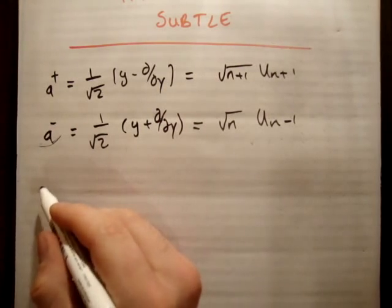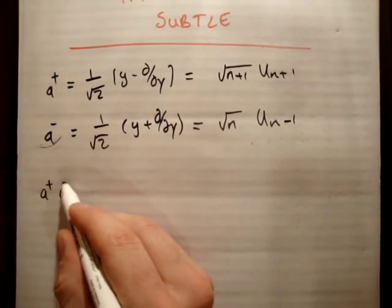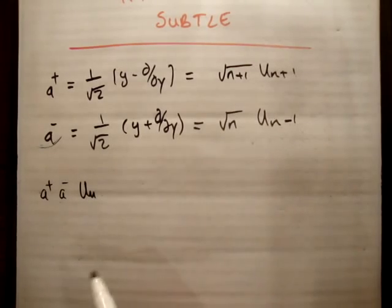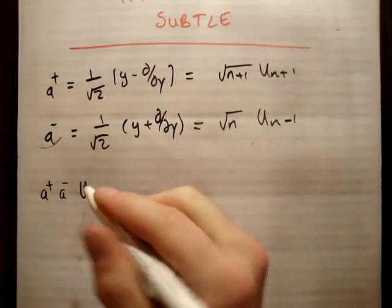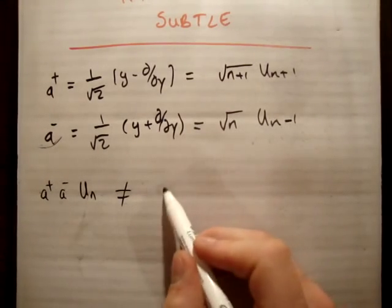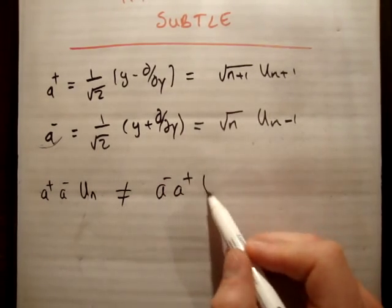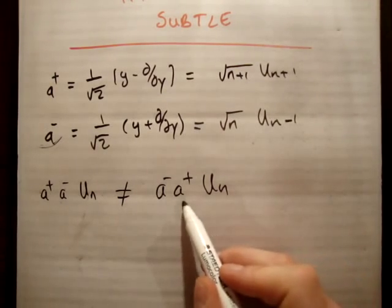So let's take an example. If we apply A+ A- on un. Notice that, well I haven't really shown that they don't commute, but I'm telling you that they do not commute. So A+ A- is not equal to A- A+.